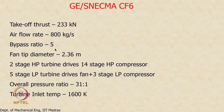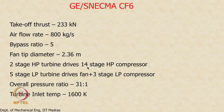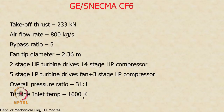Looking at the specs of this CF-6 engine: it is a low bypass ratio engine with a bypass ratio of 5, handles about 800 kg/s at takeoff, and has a fan tip diameter of about 2.36 meters — so the fan blades are quite large. It has a 2-stage HP turbine driving a 14-stage HP compressor, a 5-stage low pressure turbine driving the fan plus a 3-stage low pressure compressor, an overall pressure ratio of about 31:1, and a turbine inlet temperature of about 1600 K.